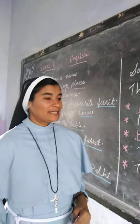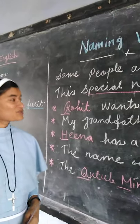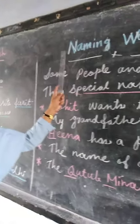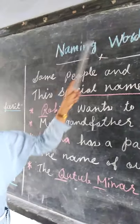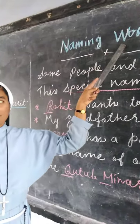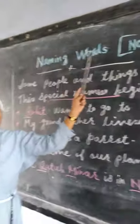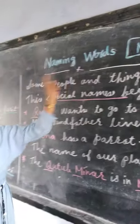Today we will learn English grammar for class 1: naming words. Naming words — another word for this is noun. Naming words, or noun.